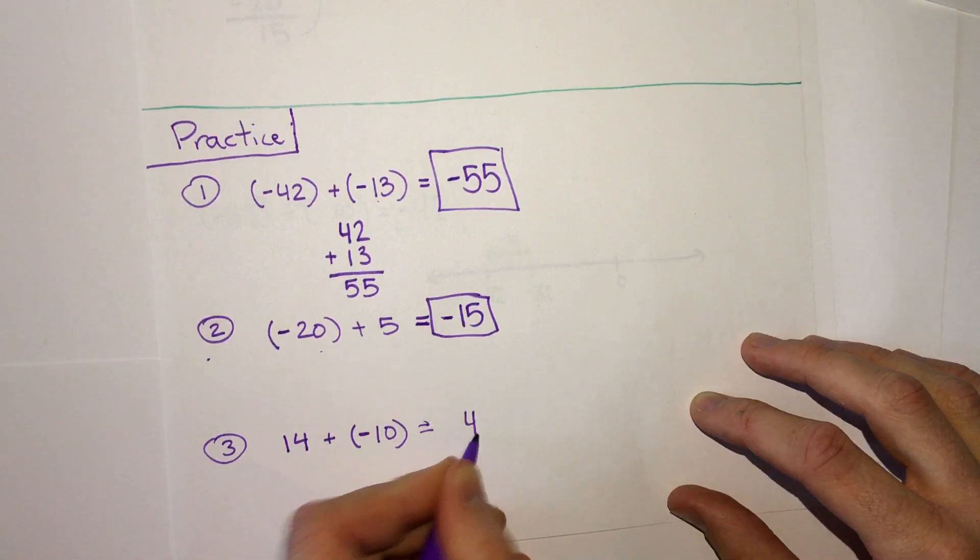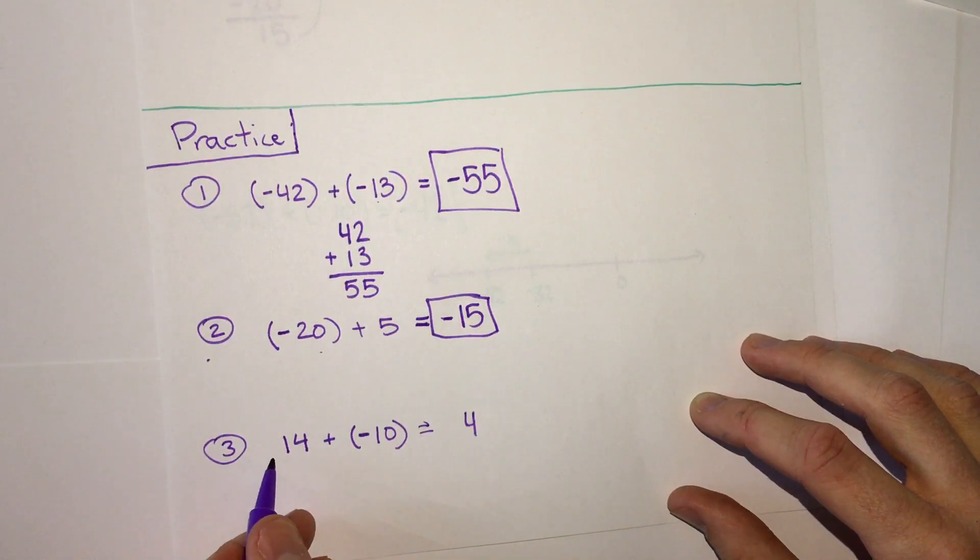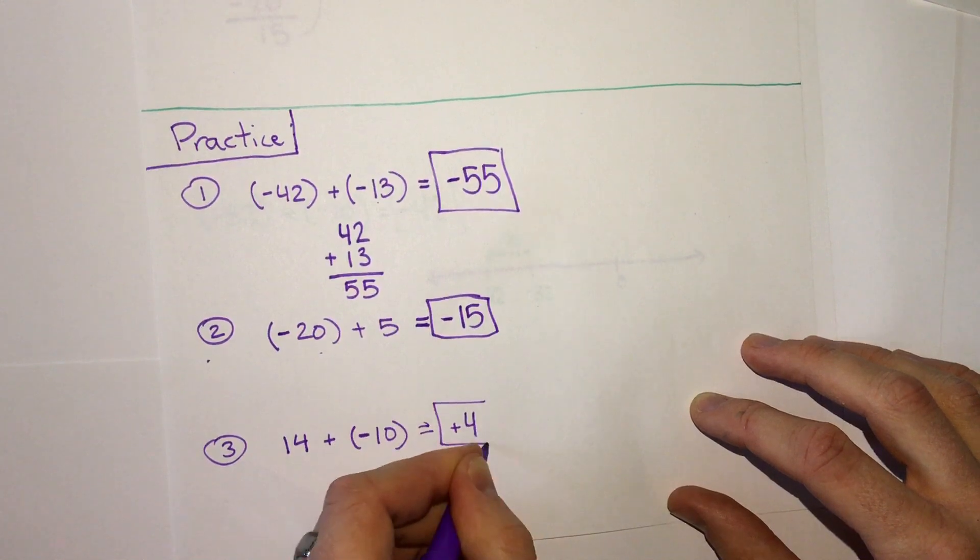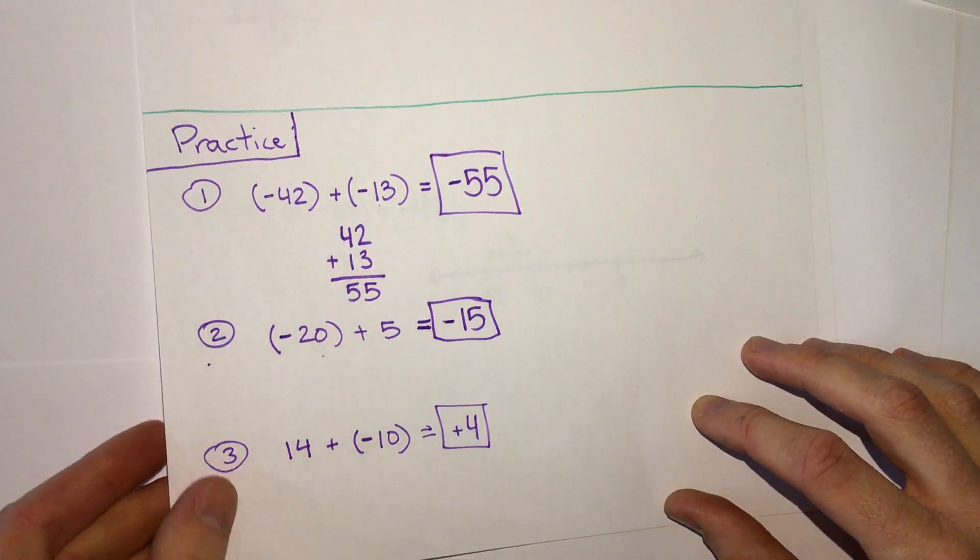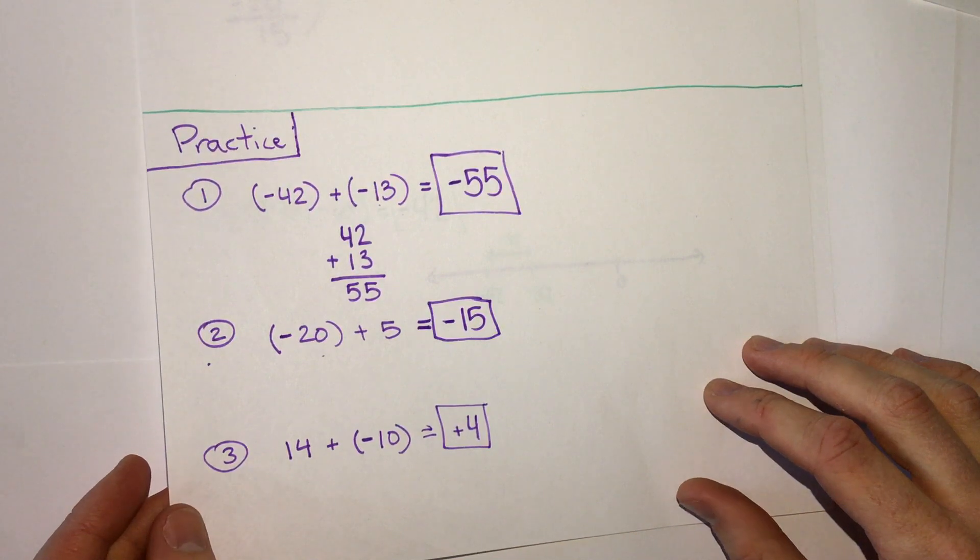And last, 14 plus negative 10. One positive, one negative, so subtract the numbers. 14 minus 10 is 4. Which one is bigger? The positive. So our answer is positive 4. So hopefully you got those answers right.